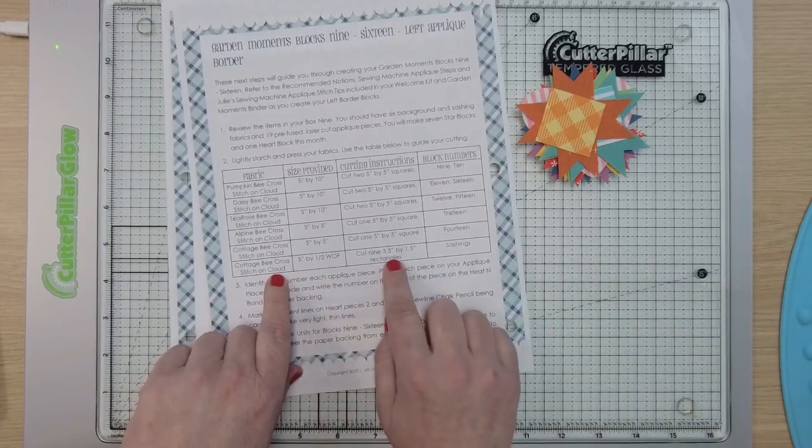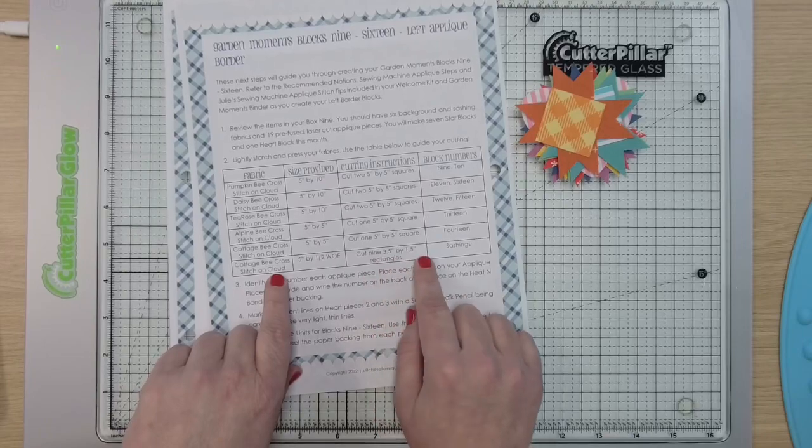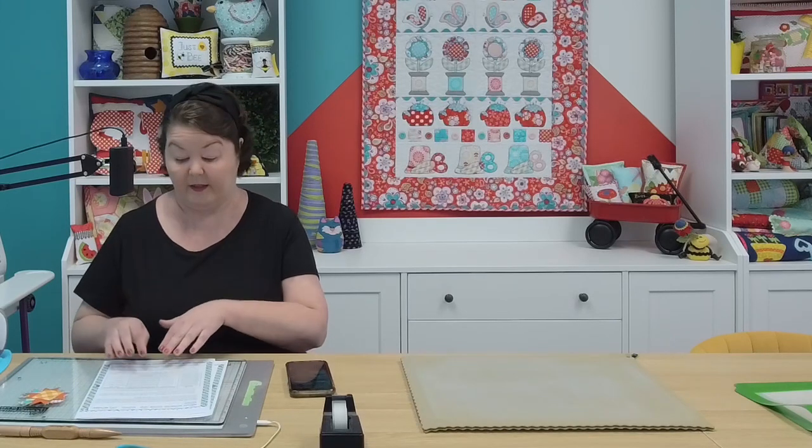And with that you're going to press it and then very specifically cut the three and a half by one and a half inch rectangles for your sashing. The applique background fabrics we're having you just cut loosely to five inches because we're going to trim them down eventually to three and a half inches before you assemble your border this month. So when it comes to your sashings, that three and a half by one and a half is your real number. Cut carefully with those, but when you're cutting your five inch squares it's okay if it's four and three quarters, you're going to trim it down to three and a half so you have more than enough fabric.